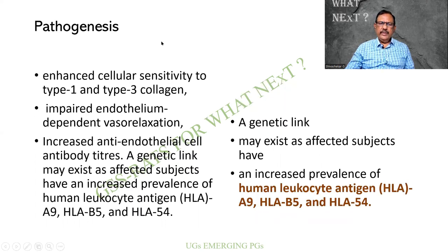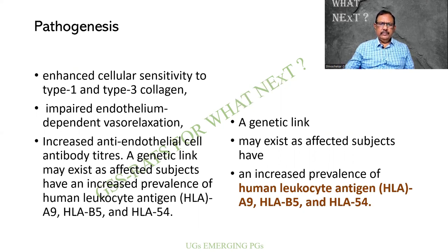What is the pathogenesis? It can be an enhanced sensitivity to type 1 and type 3 collagen. The endothelium is impaired, so there is not much vasorelaxation. Increased anti-endothelial cell antibody titers can be present. Some say there is a genetic link — there is an increased prevalence of HLA-A9, B5, and HLA-54, though it may exist in other diseases as well.